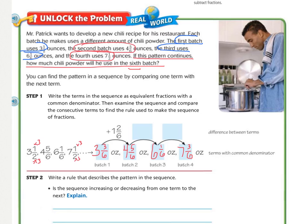So, you should have wrote 3 and 3/6, 4 and 5/6, 6 and 1/6, and then 7 and 3/6. The next part of step 1 is to examine the sequence and compare the consecutive terms. Those just means the ones right after each other to find the rule used to make the sequence. So, if we look right here, we can see that the difference between 3/6 and 5/6 is 2/6, and the difference between our whole number 3 and 4 is 1 whole. So right there, the difference is 1 and 2/6.